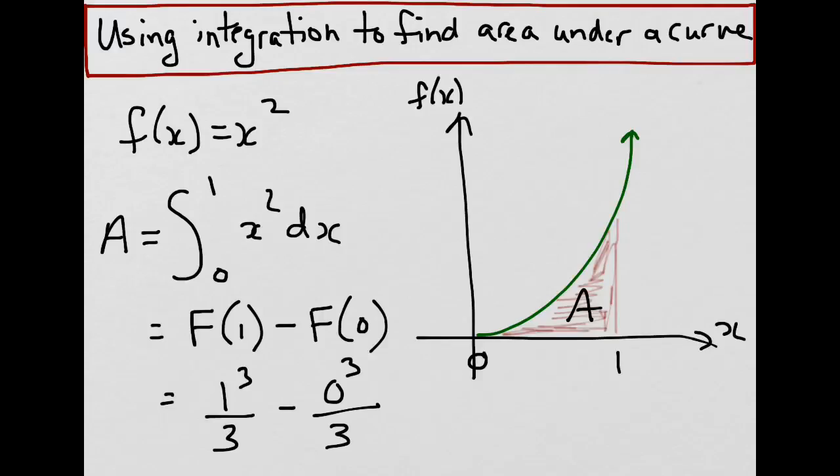And what we end up with is 1 cubed, which is 1 divided by 3, which is equal to 1 third, minus 0. So, the area under the curve of x squared, from 0 to 1, is 1 third, whatever the units may be.